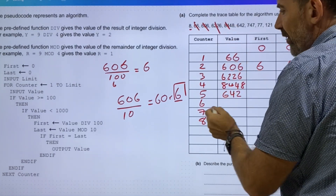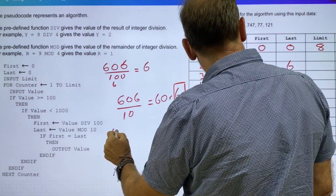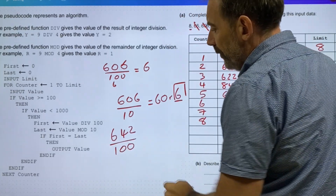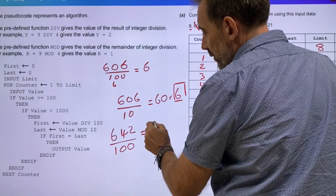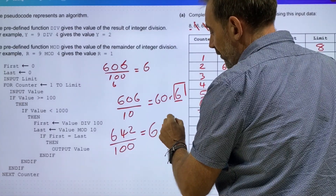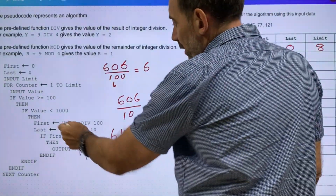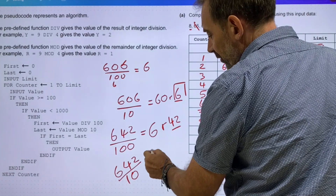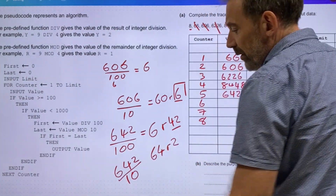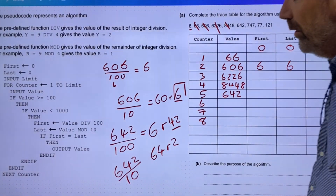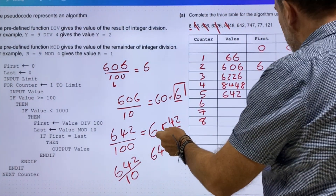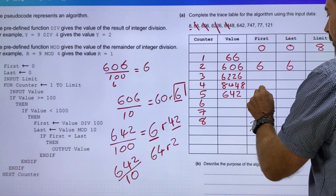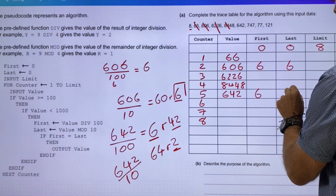642 does sit within this range. 642 divided by 100 equals 6 remainder 42. And 642 mod 10: 642 divided by 10 is 64 remainder 2. So we're going to put the first number as 6 and the remainder as 2.